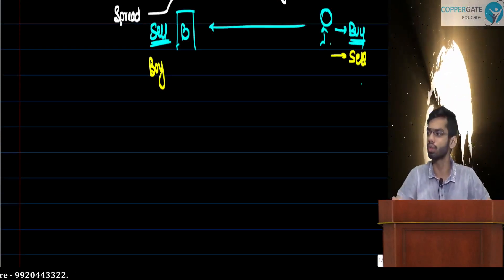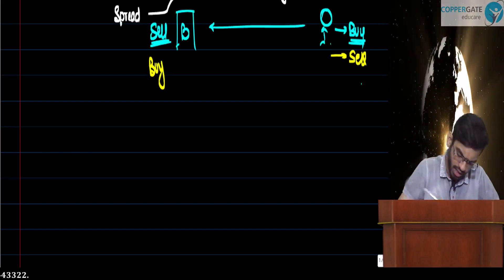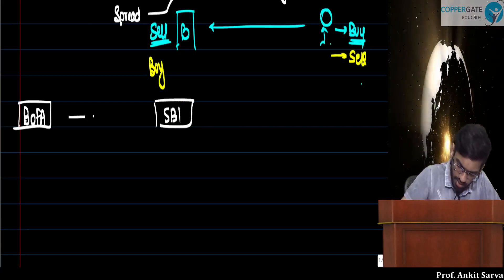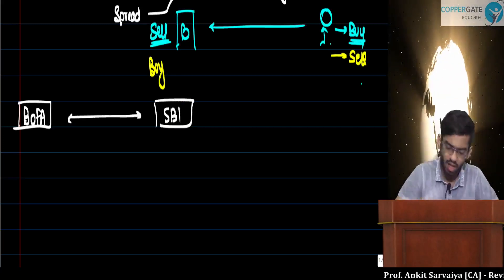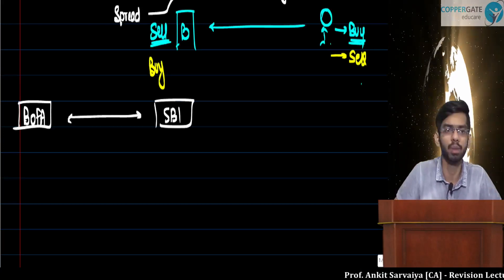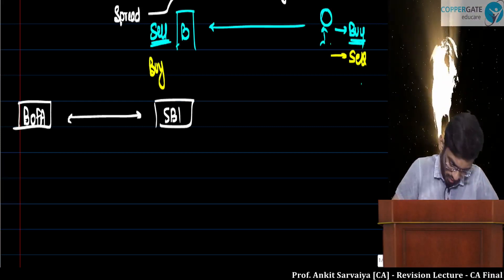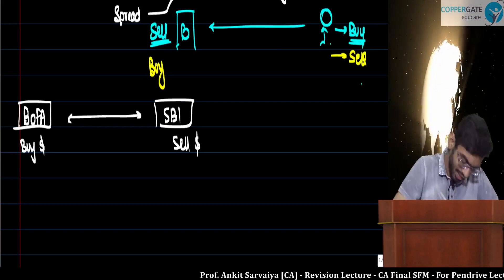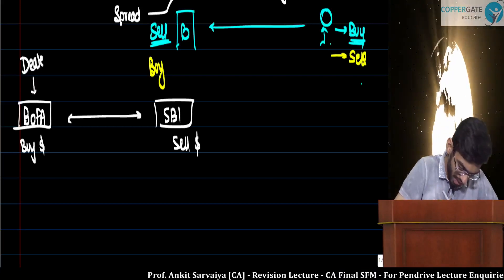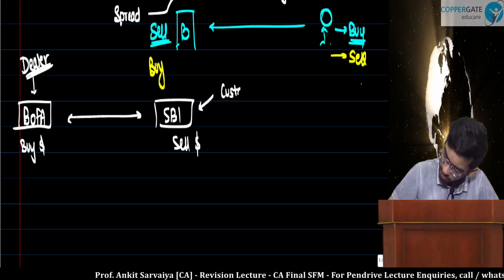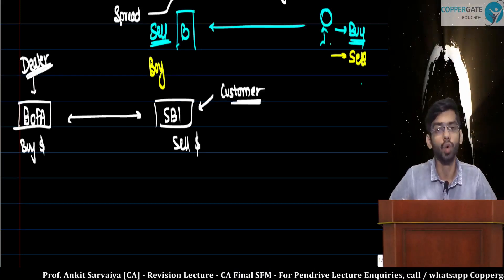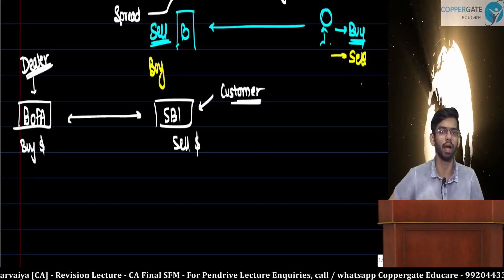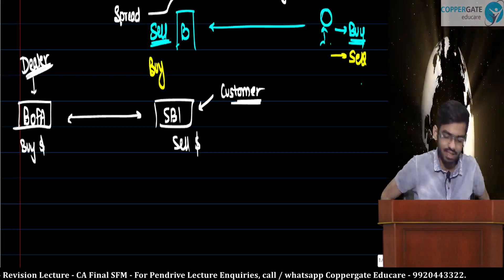It is possible that two banks exchange quotes with each other and enter into forex transactions. For example, Bank of America and SBI may transact in foreign exchange. In that case, one bank acts as the dealer and the other as the customer. It is not necessary that one party must be a non-bank — two banks can have foreign exchange transactions.